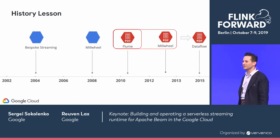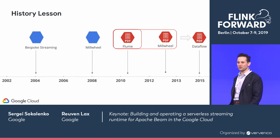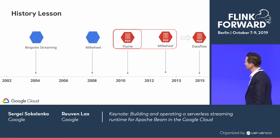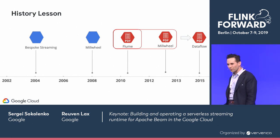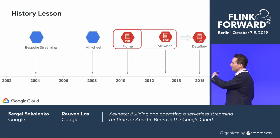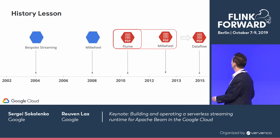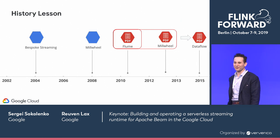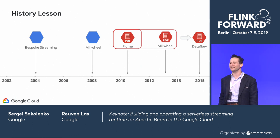Around 2007-2008, Google started working on a system called Millwheel, which was meant to be a generic streaming system for writing stream pipelines without the need to keep writing bespoke systems. There was also a system called Flume, a high-level pipeline processing system. Over the years, several papers were published — on Flume, on Millwheel — and then in 2014 Google launched Dataflow and published a paper on it in 2015. Over these years, we've learned a lot of lessons, many of them due to false starts.